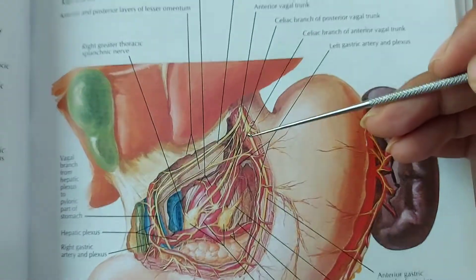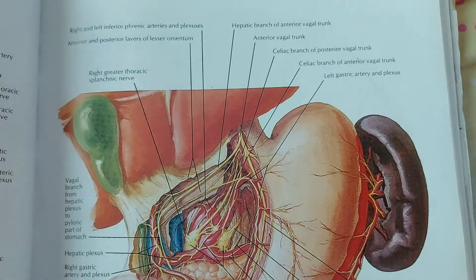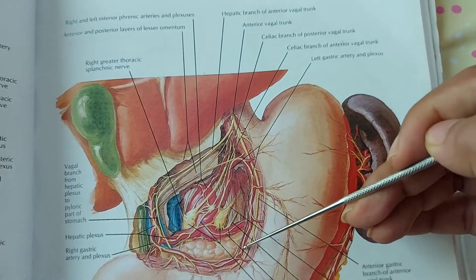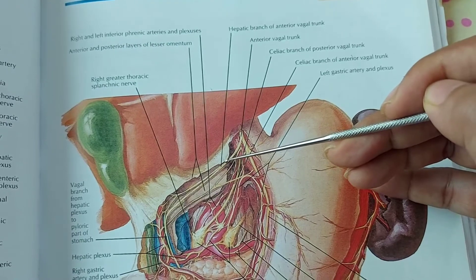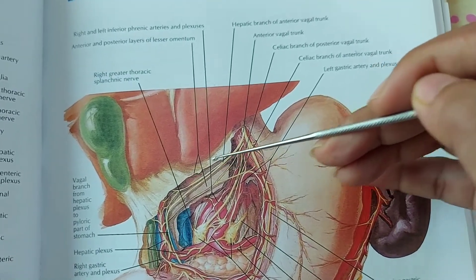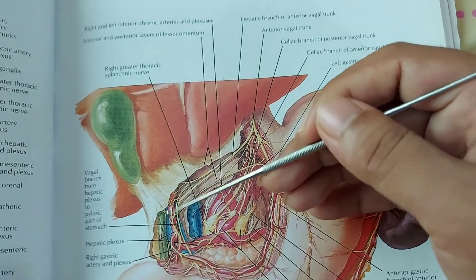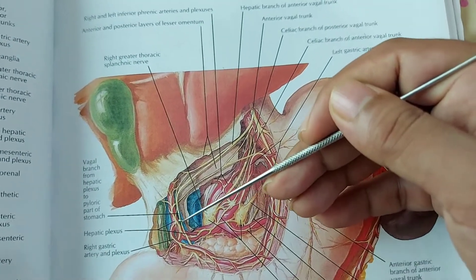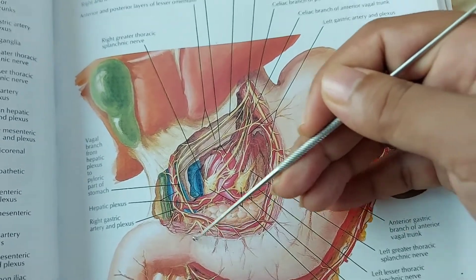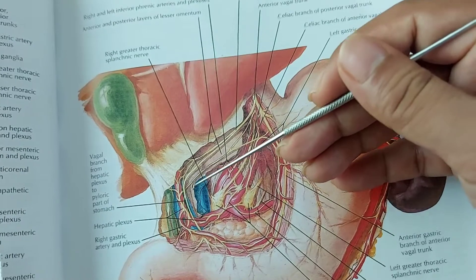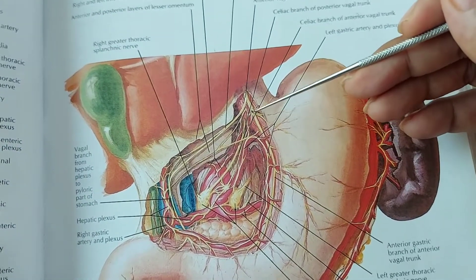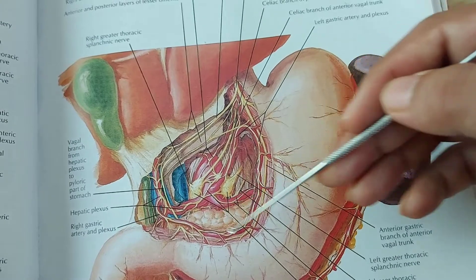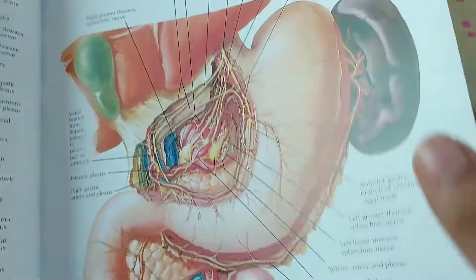After entering the abdomen, the left vagus nerve divides into two branches. One branch is the gastric branch along the lesser curvature of the stomach. The other branch is the hepatic branch, which passes within the lesser omentum and then divides into the hepatic branch and the pyloric branch. The pyloric branch supplies the pre-pyloric region, pylorus, and duodenum. The gastric nerve along the lesser curvature supplies the remaining anterior surface of the stomach.